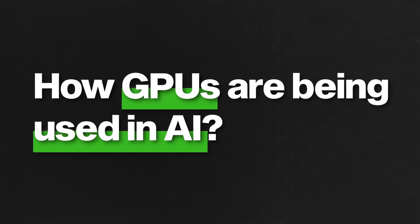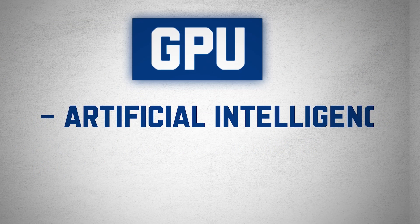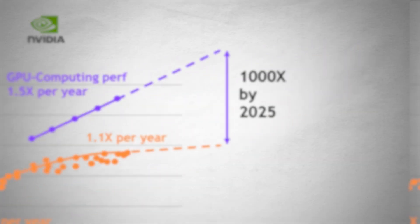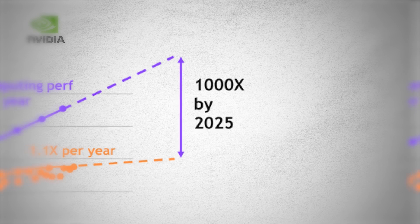So basically GPUs are like the graphics cards we use for gaming — but how are they being used in AI? GPUs aren't only for graphics; their ability to handle multiple operations at once makes them ideal for artificial intelligence and machine learning. In fact, Nvidia reports that since the introduction of GPUs, AI performance has seen an extraordinary increase, improving by as much as 1000 times over the span of a decade.